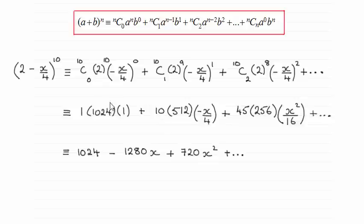I've put down 2 to the power 10 as 1024, 2 to the 9 is 512 and 2 to the 8 is 256. So should be able to simplify that and that takes you then to this result here.